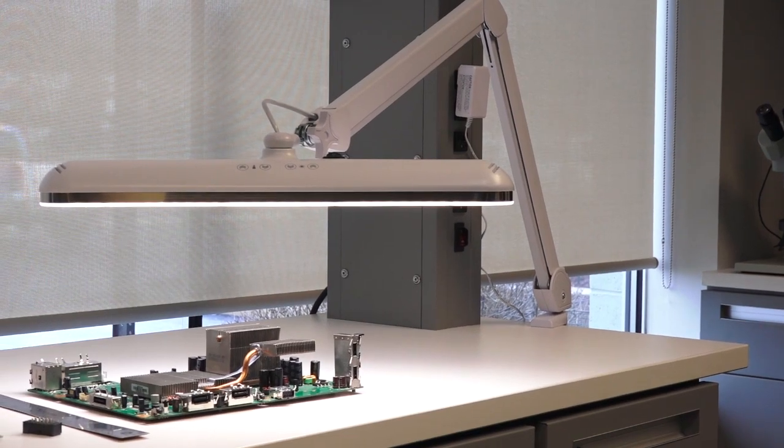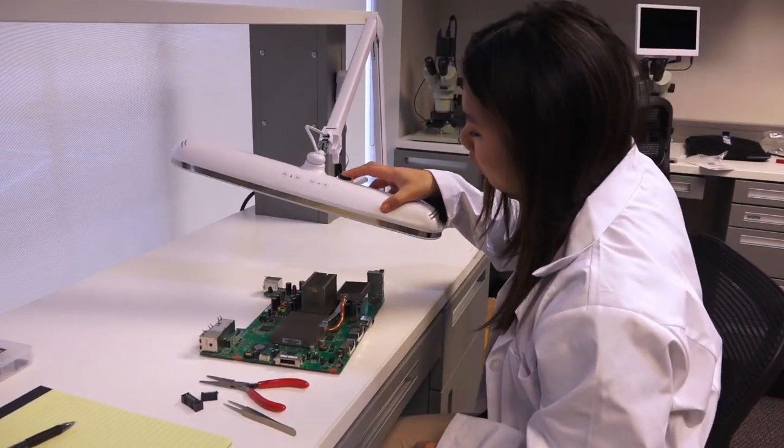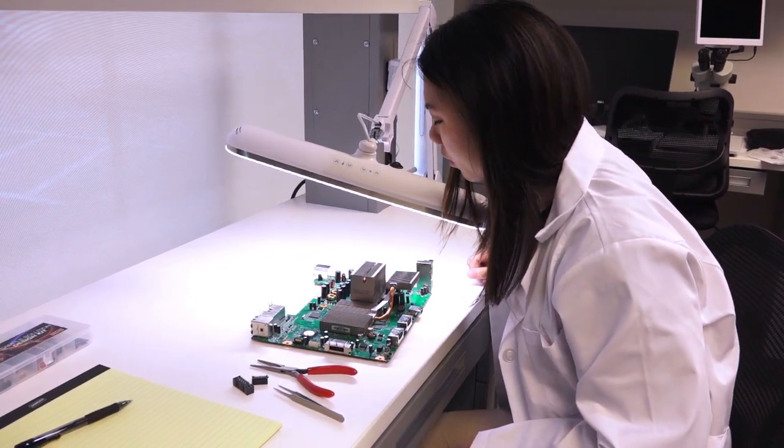The Neolite features a fully covered spring balanced arm, allowing users to position the lamp where it's needed and easily move it out of the way when not in use.